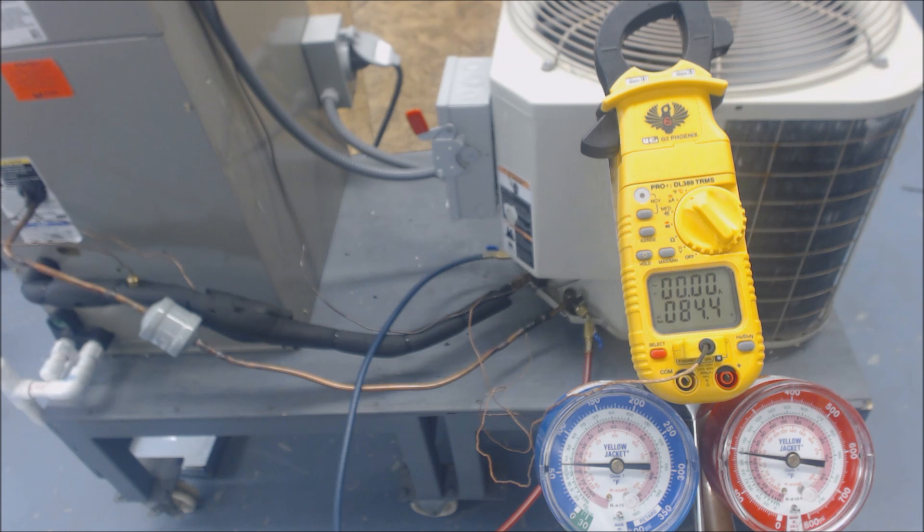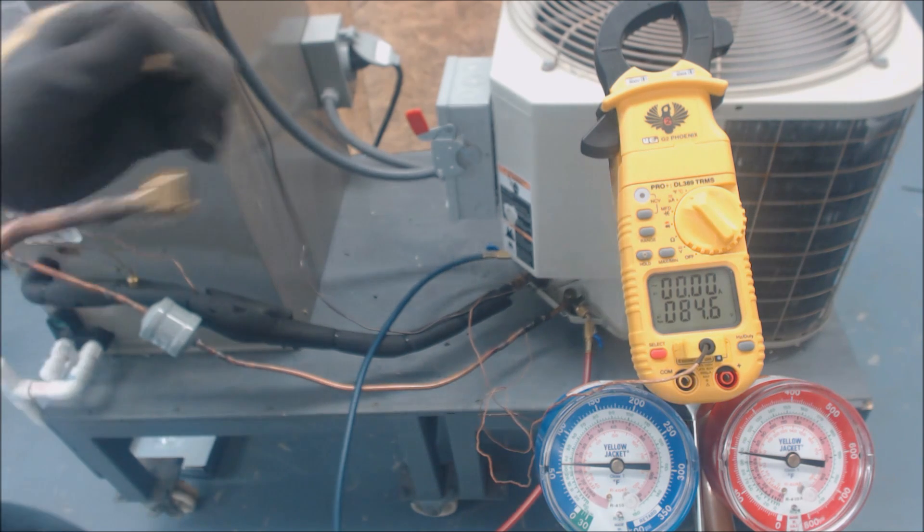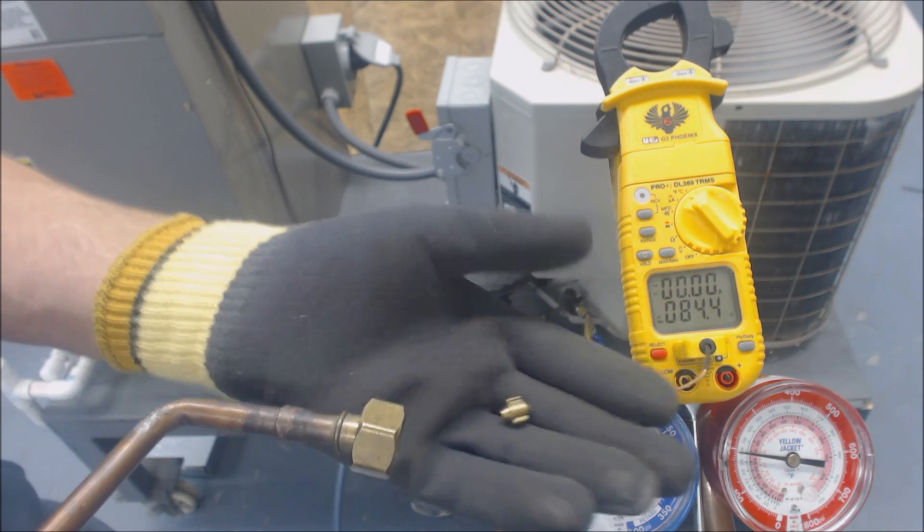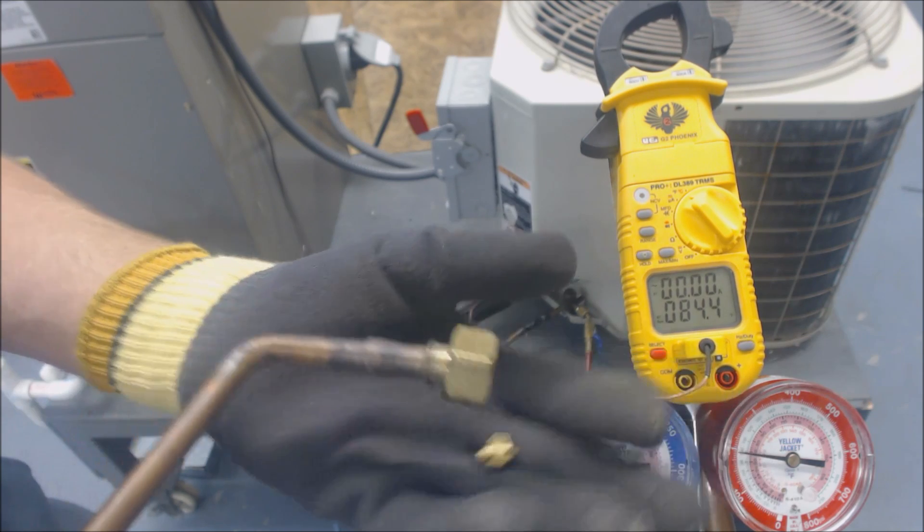Therefore you should use the subcooling charging procedure to figure out if this has the correct charge. You would not use superheat. Superheat would be used for pistons, orifices, and capillary tubes. That's the only time you would use a superheat charging process.